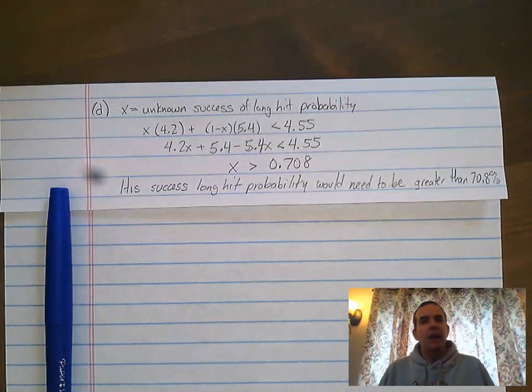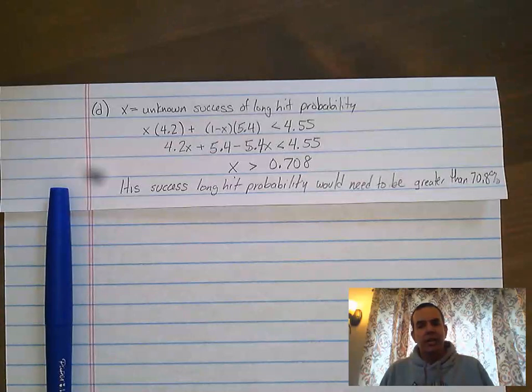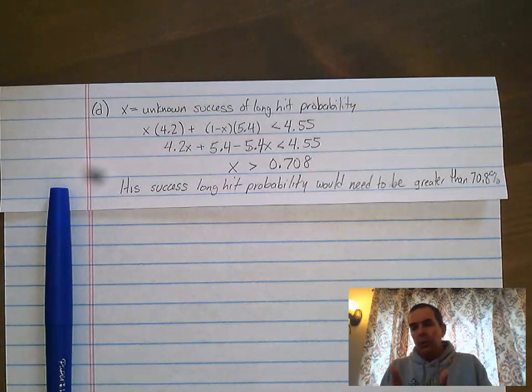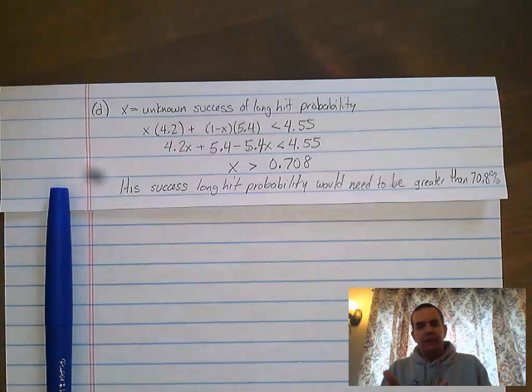Part D of this question, wrapping up the Uniform Progress check, is the Algebra 1 component. What it actually asked was, what does the probability of success have to be on the long hit in order for it to make sense for Miguel to go with the longer hit?